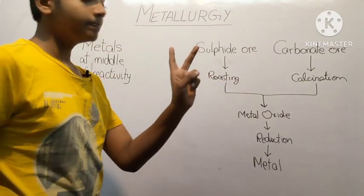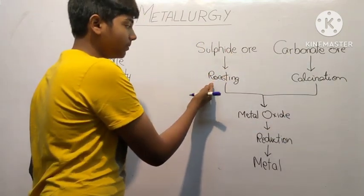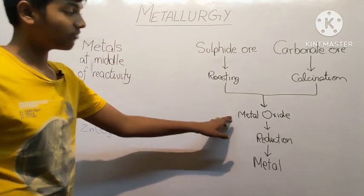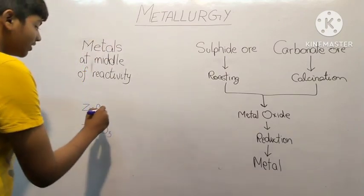These include sulfide ore and carbonate ore. For sulfide ore we perform roasting. After roasting we get metal oxide, and after getting metal oxide we perform reduction and we get metal.